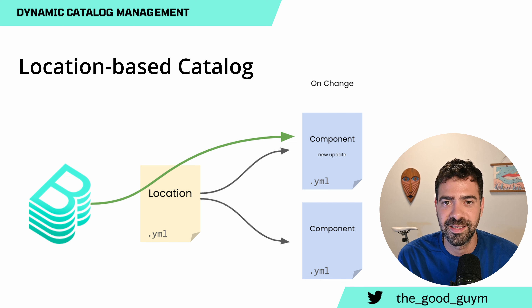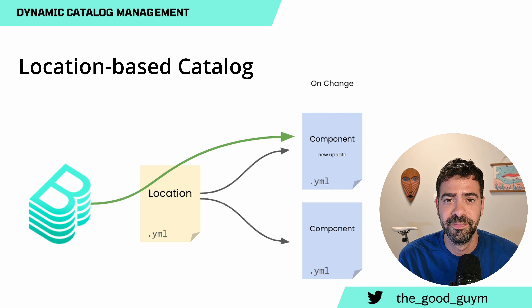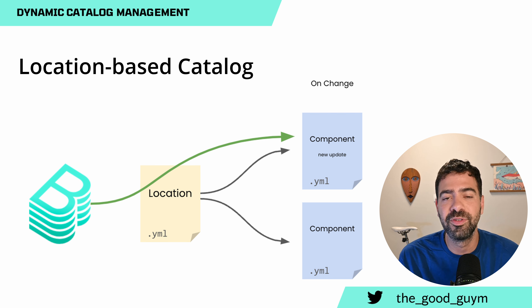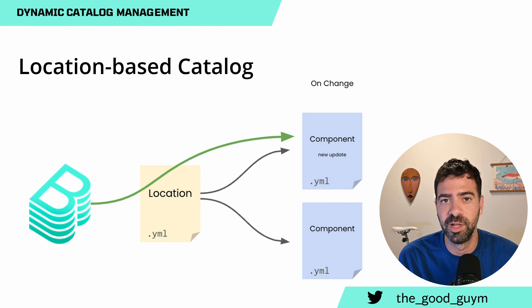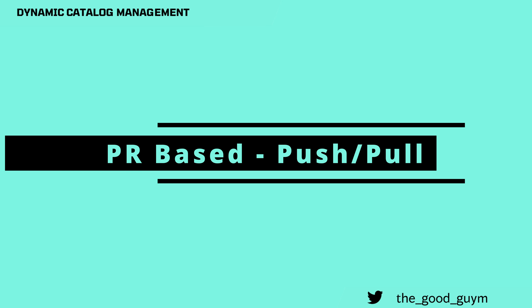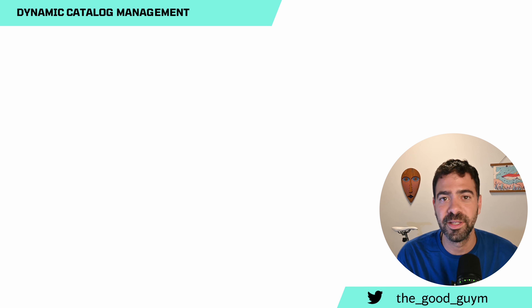The location will automatically fetch the right information into Backstage, which solves part of the problem. However, users will still have to manage the software component file itself — for example, if you want to update one link in the software catalog, someone will need to manage and commit it to the target repo. So it solves only part of the problem; it's not a fully dynamic configuration.